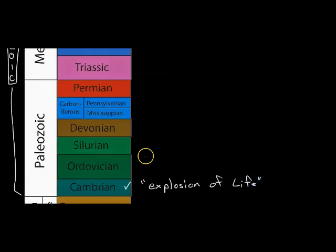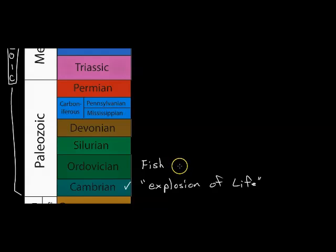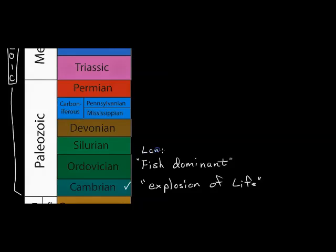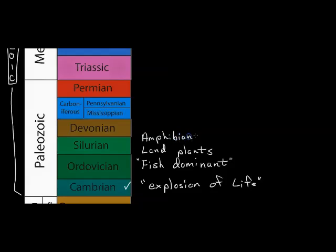In other words, there was a huge amount of development and evolution of different life forms. The life forms were initially sea creatures — it was very fish-dominant. This is also the time when we have our first land plants, and following the land plants we had our first amphibians.